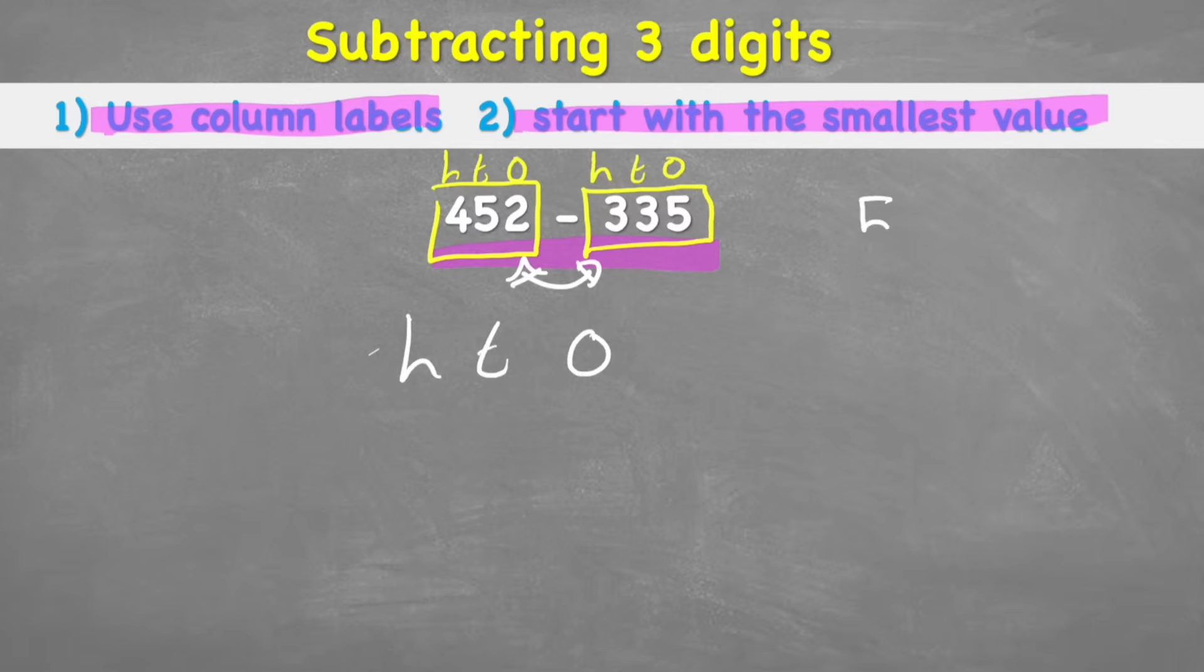For example, if I had 5 subtract 2, I get 3. But if I move these two numbers around and I put 2 subtract 5, I do not get 3. I get a totally different answer. I actually get a negative answer in this case.